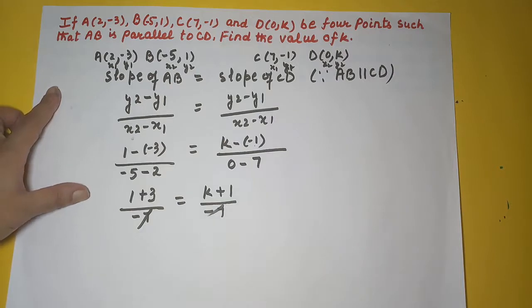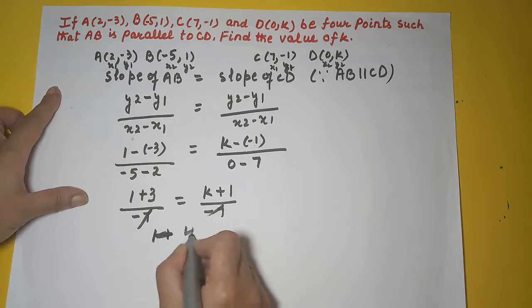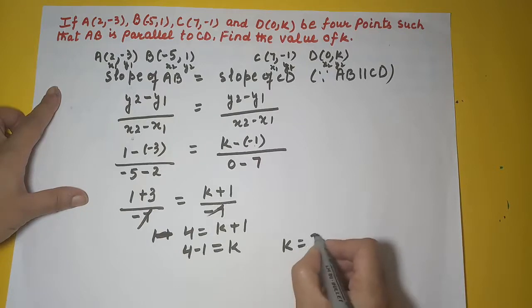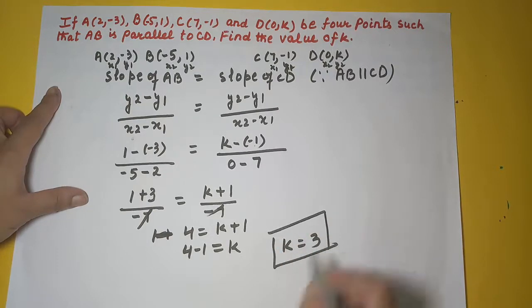So minus 7 and minus 7 will cancel. You are left with 1 plus 3 which is 4 is equal to K plus 1. If you shift this 1 to the other side, you will get 4 minus 1 is equal to K, or you have found the value of K as 3.